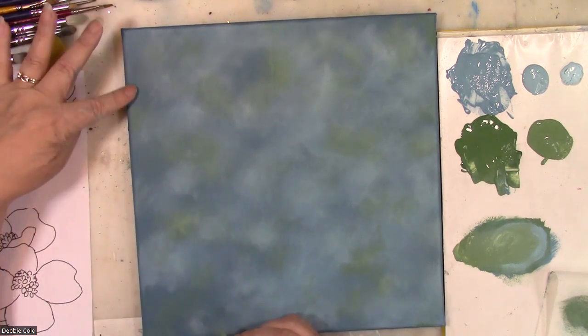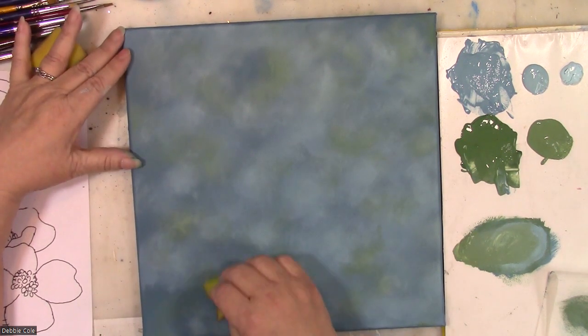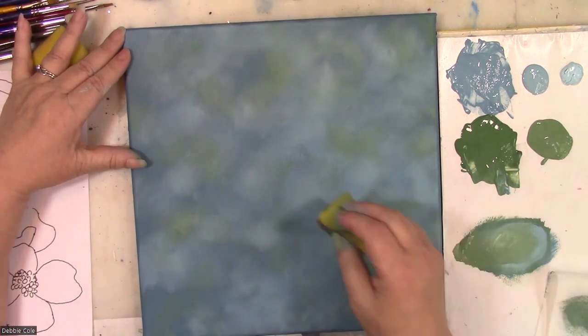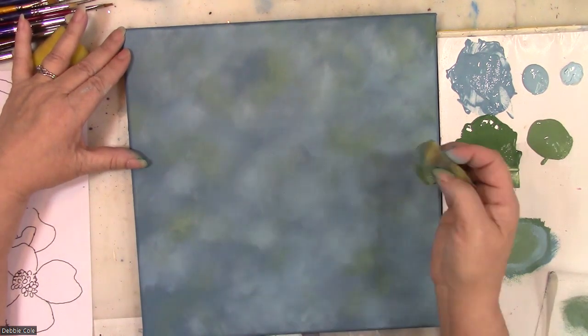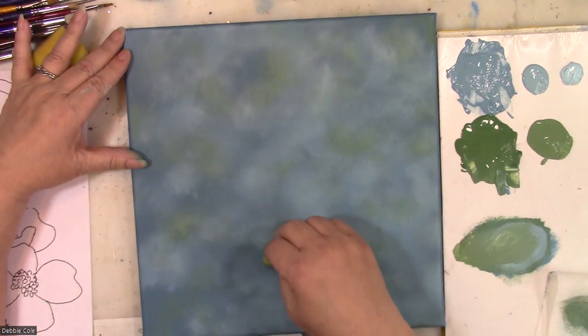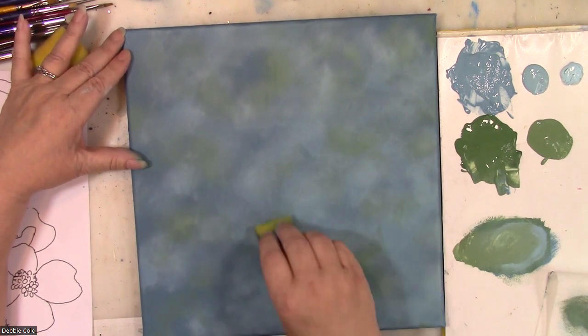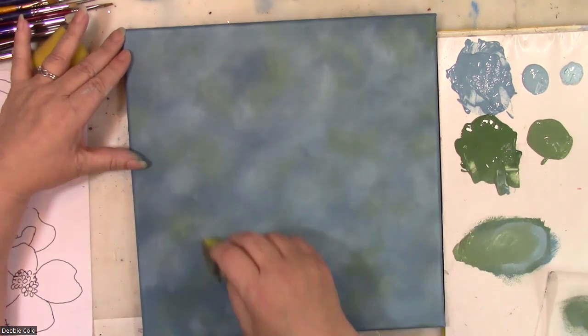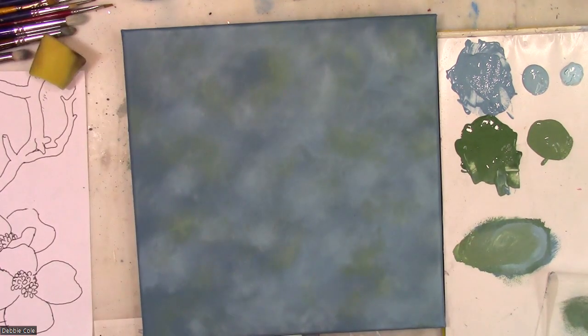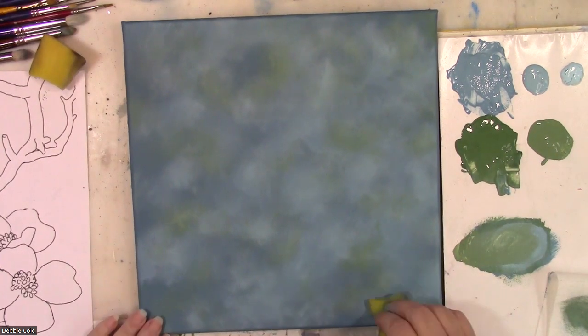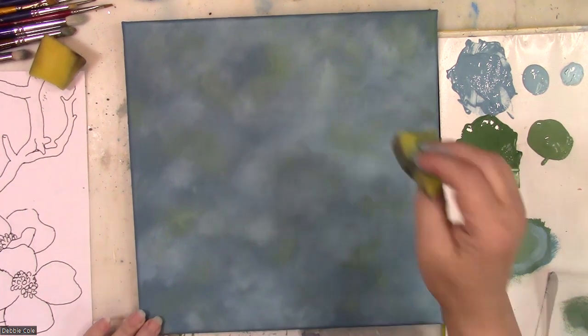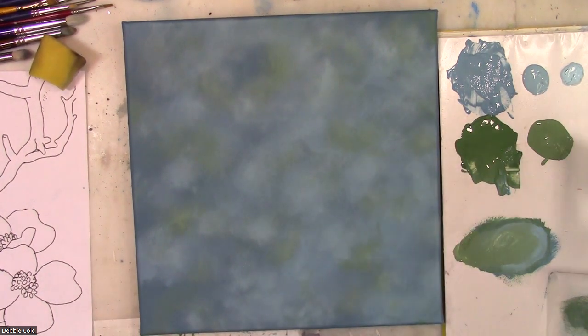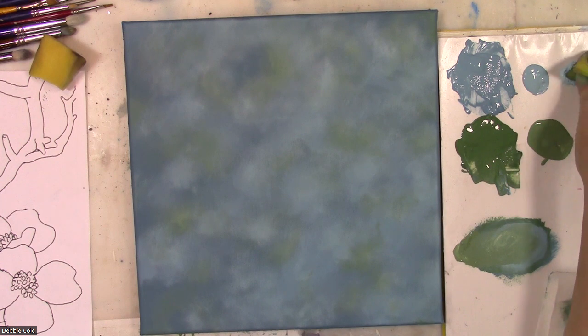Also, you have to be careful along the edge of the canvas because the canvas is raised up on the edges and so it will take the paint faster than the actual body of the canvas. Now we're going to go into the lighter color.